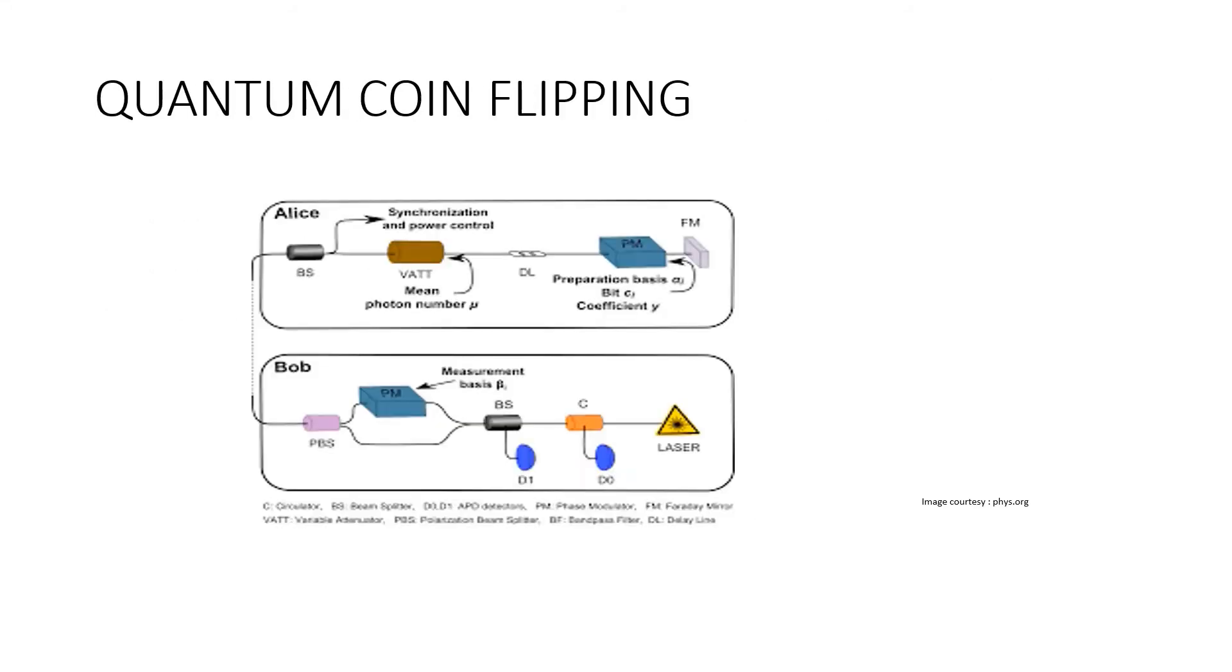Quantum coin flipping. Unlike quantum key distribution, quantum coin flipping is a protocol that is used between two participants who do not trust each other. The participants communicate via a quantum channel and exchange information through the transmission of qubits. But because Alice and Bob do not trust each other, each expects the other to cheat. Therefore, more efforts must be spent on ensuring that neither Alice nor Bob can gain a significant advantage over the other to produce a desired outcome.